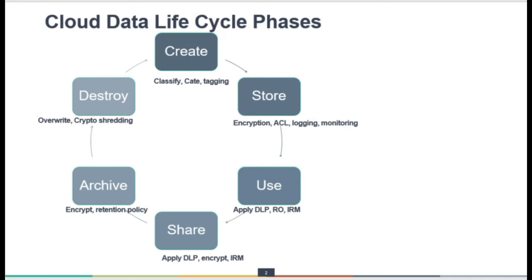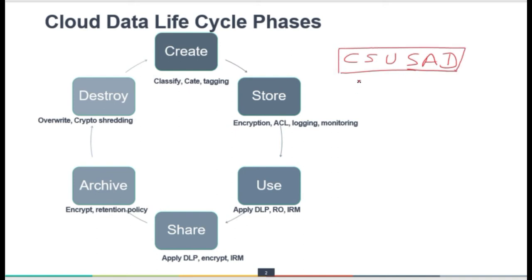From the cloud data life cycle point of view, we have six stages or six phases of data in the cloud. For easy remembering, I would suggest practicing CSU-SAD: Create, Store, Use, Share, Archive, and Destroy. CSU-SAD are the six data life cycle phases in the cloud.